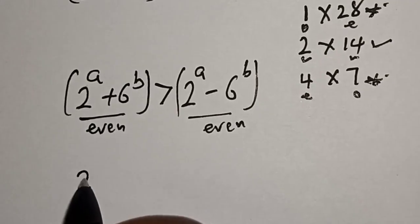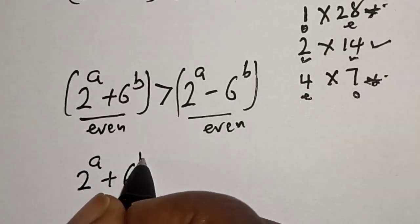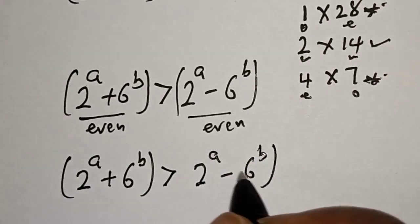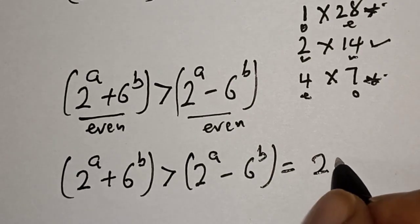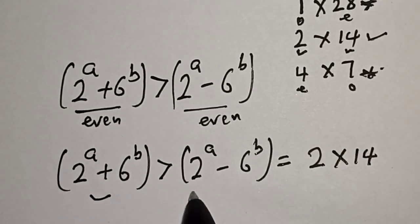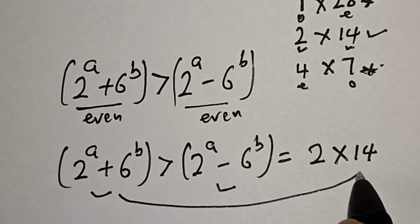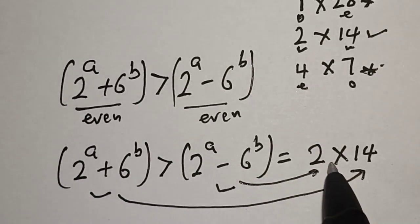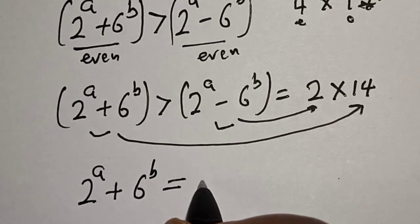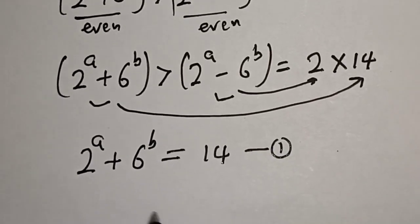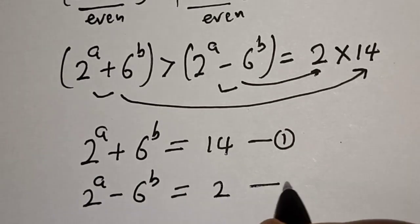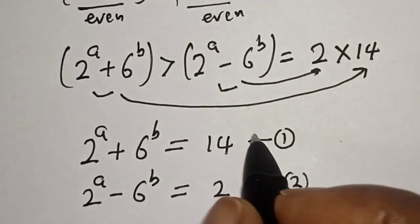Since 2 to the power of a plus 6 to the power of b is greater than 2 to the power of a minus 6 to the power of b, we compare 14 with the larger factor and 2 with the smaller. Therefore, 2 to the power of a plus 6 to the power of b equals 14 — call this equation 1 — and 2 to the power of a minus 6 to the power of b equals 2 — call this equation 2. Now let's solve these simultaneously by the elimination method.